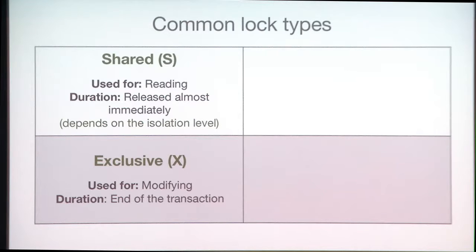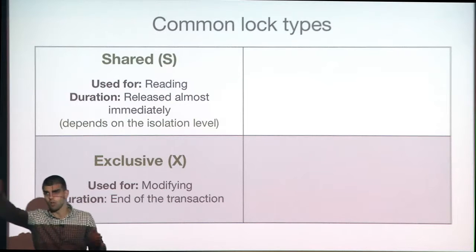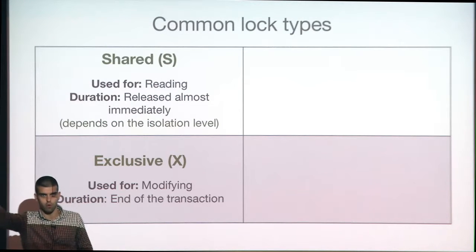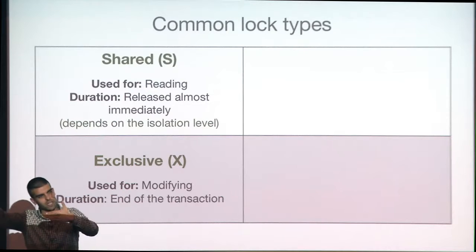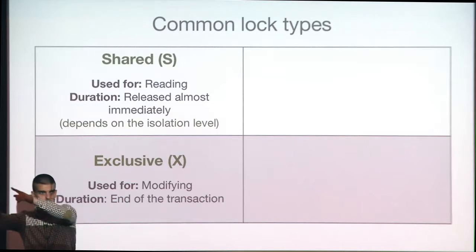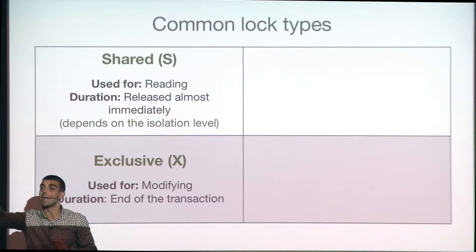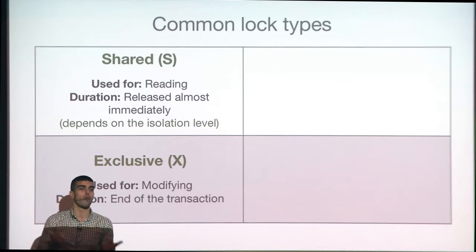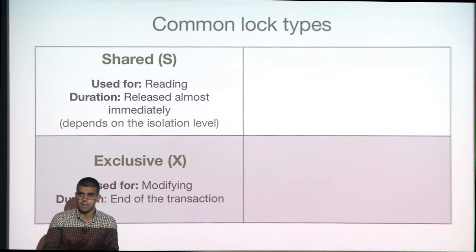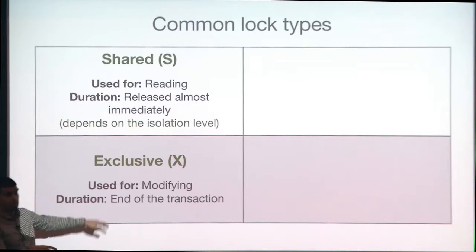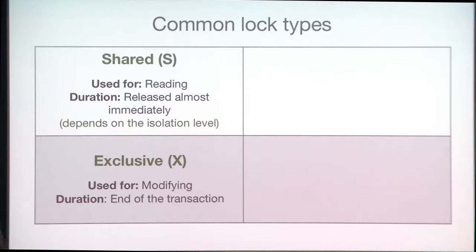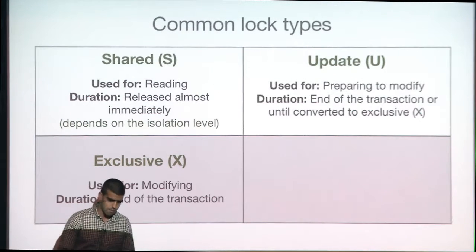Imagine you start a transaction, modify something, and release the exclusive lock. At the same time another transaction starts, modifies what you just changed, and commits. Now your transaction has to roll back — how do you roll back something that's no longer in the state you left it? It cannot be done. That's why we keep the exclusive lock to the end of the transaction.